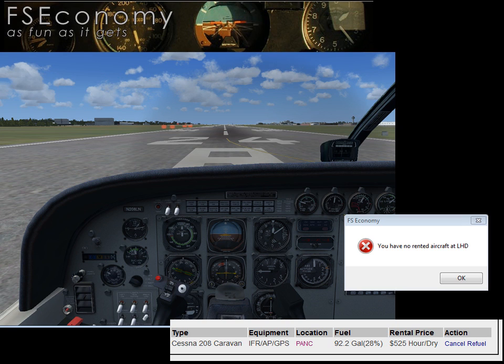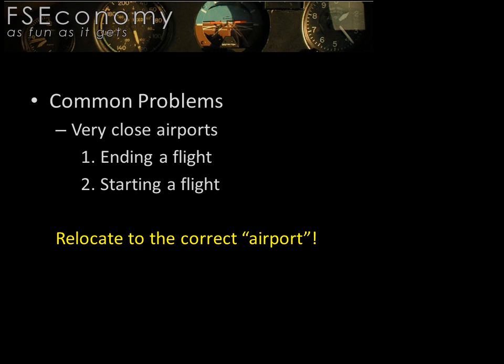The obvious answer is to relocate your aircraft to a spot on the Earth that is closer to the geographical coordinates indicated on the FSE website. If you recently landed and FSE placed you at the wrong airport, you'll have to start your client at this wrong airport, take off and land again, and shut down at the correct airport. However, if you're simply trying to start your flight and the client is telling you that you have no rented aircraft at a location you are sure you are not at, you can simply taxi or slew your aircraft and try again.